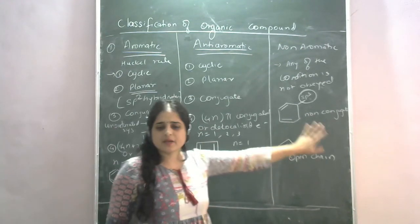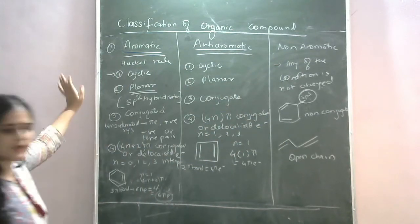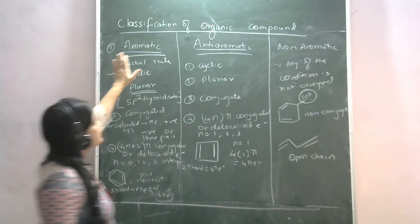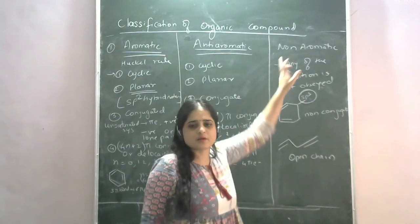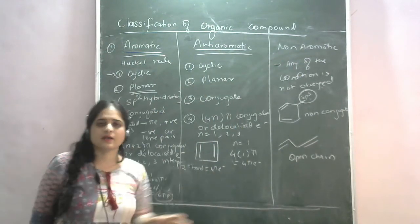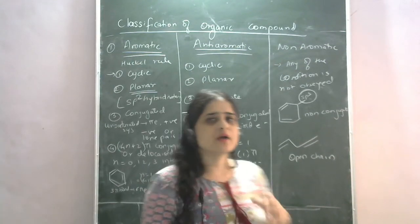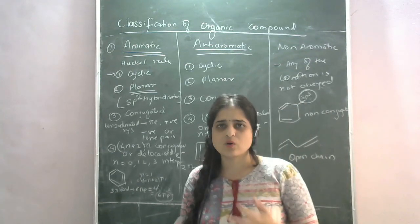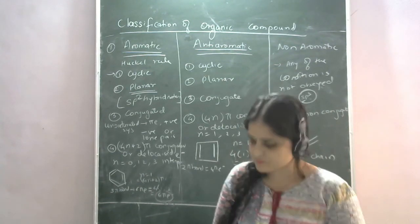These are the basic conditions you need to check. If these basic conditions are followed, you can classify the compounds. Compounds are classified as aromatic, anti-aromatic, and non-aromatic. If you understand these criteria, there are examples we will solve in the next video. For now, we'll stop here.